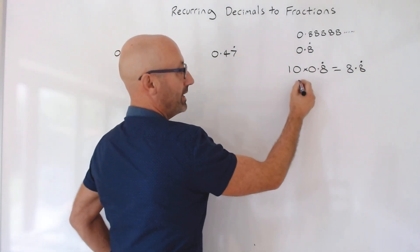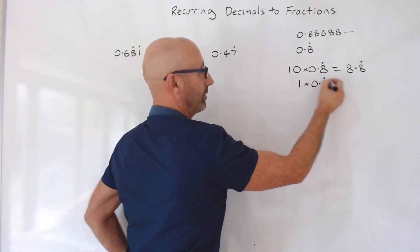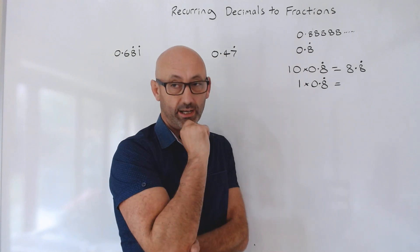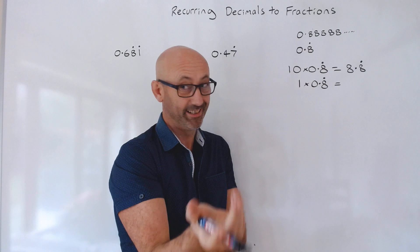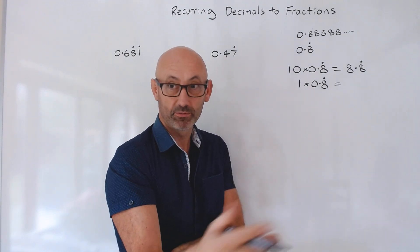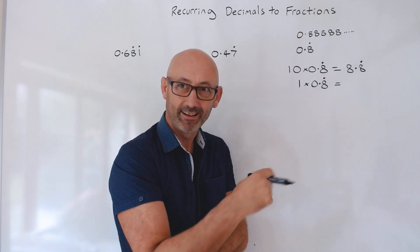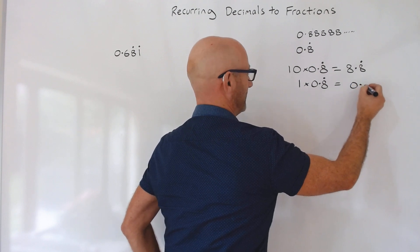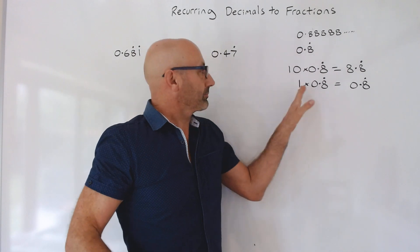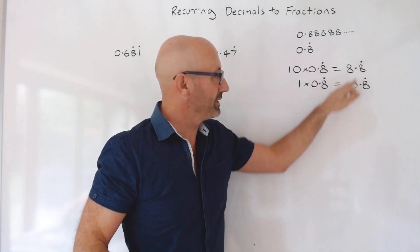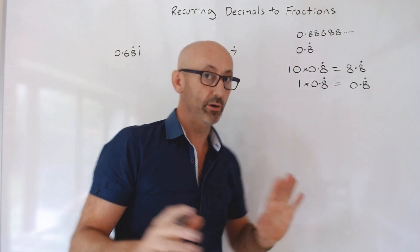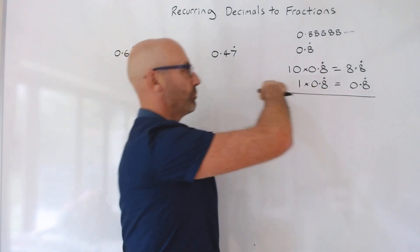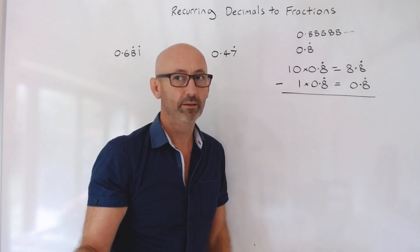That's 10 of them. Now, if I choose one of them — if you times anything by 1, what do you get? What's 1 times 5? 5. What's 1 times 10? 10. What's 1 times x? X. Well done. So 1 times 0.8 recurring is 0.8 recurring. Look at the way I've set it out — I've lined up the decimal points on purpose. If I take this away, we've got 10 of them and we take away 1 of them — how many are we left with? 9.